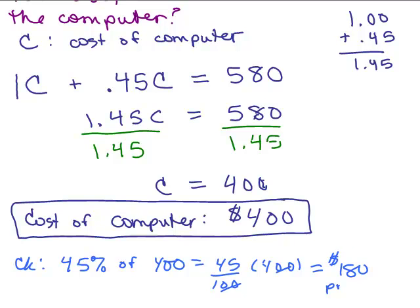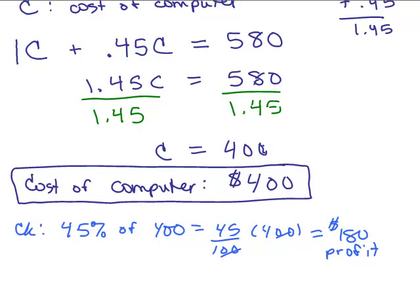That's the profit, right? Markup means the same thing as profit. So if you had original price of $400 and you marked it up $180, you get $580, and yeah, that's what it said. It said that it was selling for $580.